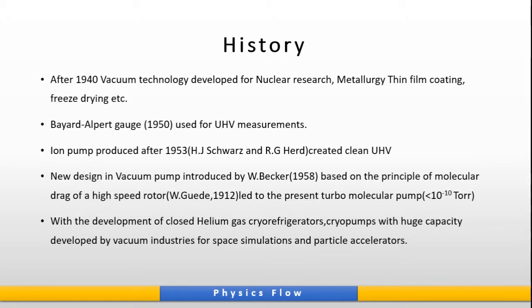The Bayard-Alpert gauge is used for ultra-high vacuum measurement, produced after 1953 by H.J. Schwartz and R.J. Herd, who created UHV conditions. A new vacuum pump design introduced by W. Becker, based on the principle of molecular drag of a high-speed rotor, led to the present turbomolecular pump, which produces pressure nearly equal to 10⁻¹⁰ Torr. With the development of closed helium cryo-refrigerators, cryo-pumps with huge capacity were developed by vacuum industries for space simulations and particle accelerators.